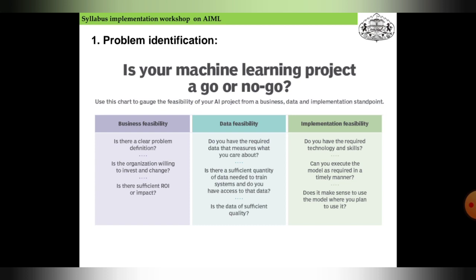The problem identification determines if your machine learning project is go or no-go. For business feasibility: is there a clear problem definition? Is the organization willing to invest in change? Is there sufficient ROI or impact?